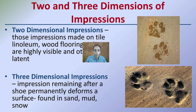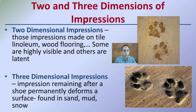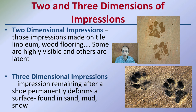or a nail or anything else that would be very specific to that one particular shoe. Now two and three dimensional impressions — how do they differ? Two-dimensional impressions are impressions made on tile, wood flooring, linoleum, or other hard surfaces — they can also be latent prints. Three-dimensional impressions remain after a shoe permanently deforms the surface, found in sand, mud, or snow. Both can be very important.